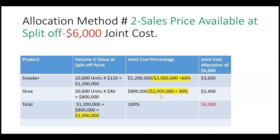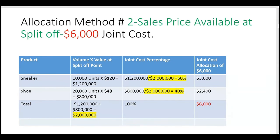For the shoe: $800,000 ÷ $2,000,000 = 40%, so 40% of $6,000 = $2,400 allocated to the shoe. We've now allocated 100% of the joint cost to both joint products based on sales revenue available at the split-off. Notice that when we use this method the sales prices are relevant, whereas when we use the pure volume method the sales prices are not relevant. The facts of the question will tell you which method to use — these are the two most common methods on the exam.